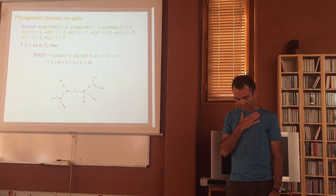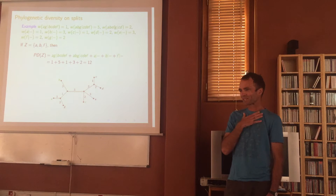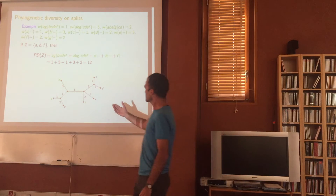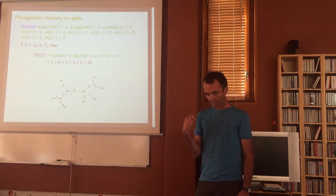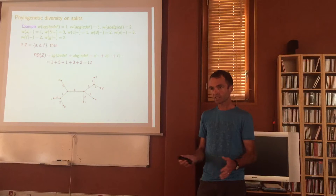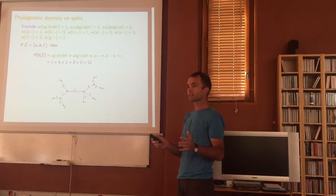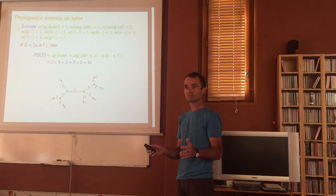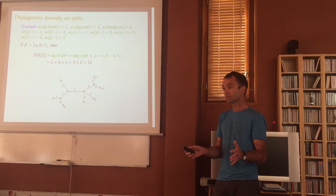Here's an aside: given a weighted tree and a positive integer K, I want to find a subset of species of exactly size K that gives the biggest PD score. It turns out to be a very easy problem — you can do it in a very greedy way. For example, if I want a subset of size four, for every pair of leaves I look for the longest path. In this case the longest path goes from G up through 5 to D, so I start with {G, D}.